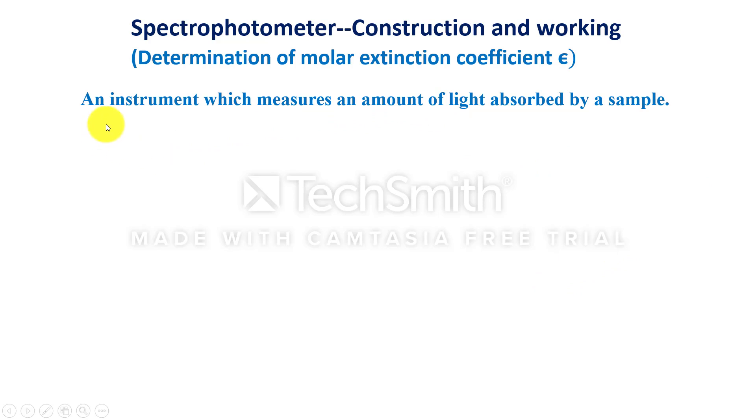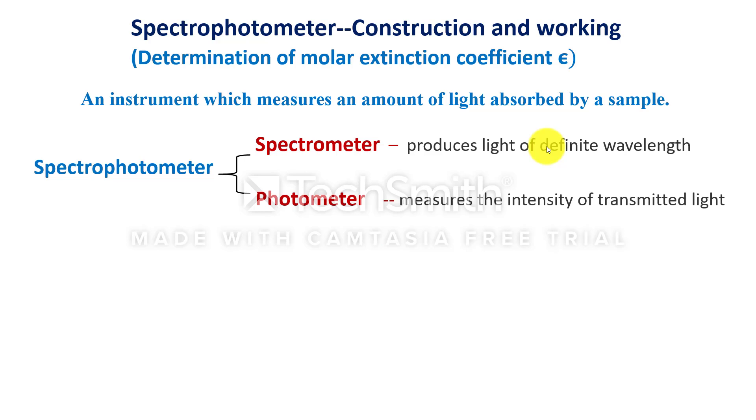Spectrophotometer is an instrument which measures an amount of light absorbed by a sample. It is made up of two units. One is spectrometer and another one is photometer.